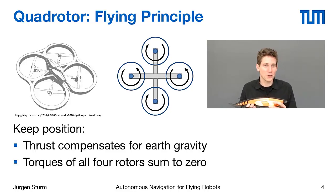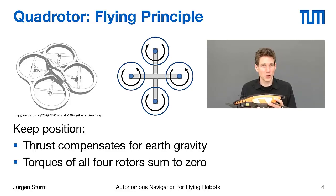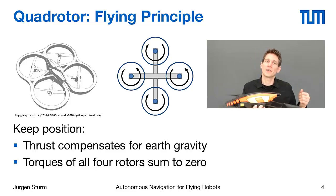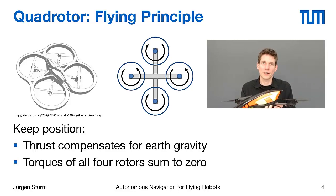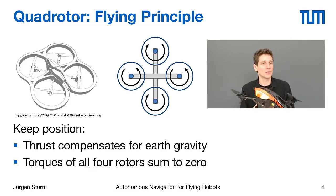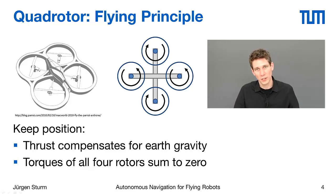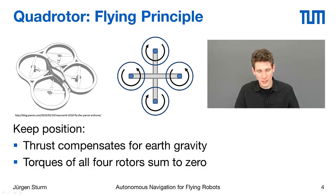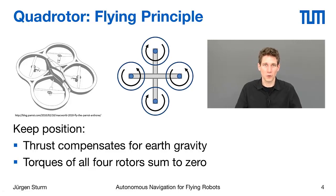The second thing is that you have to make sure that the torques of all four motors sum exactly to zero. Because if all four rotors would rotate in the same direction, that would induce a counter torque that would start to rotate the quadrotor around its yaw axis. This is physically implemented by having two opposing motors rotating in the same direction, and the other two motors rotating in the opposite direction, so that the torques sum to zero while the thrust compensates for Earth's gravity in hovering mode.